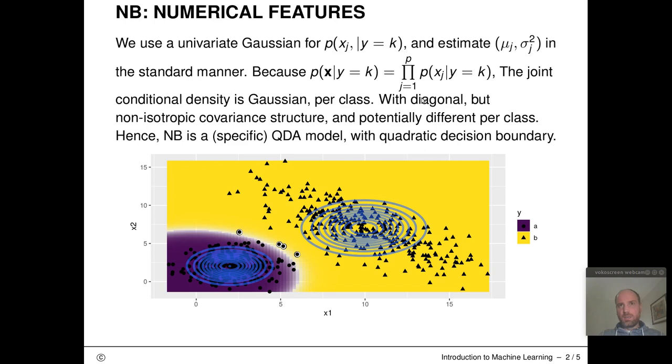What we're estimating is class conditional multivariate Gaussians, all with diagonal structure but not necessarily all the same between the classes, which means we're actually estimating a QDA model. We're estimating a quadratic discriminant model with the specific assumption that all sigma_k's have diagonal structure. This means the decision boundaries for naive Bayes between two classes are always going to be of quadratic structure.